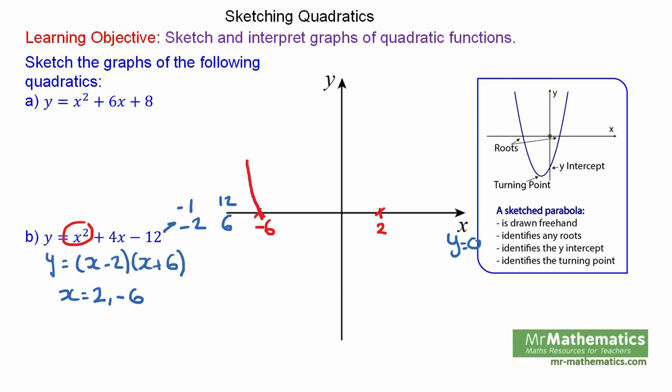Now we have got a positive coefficient of x squared, so y will have a negative intercept. The y value will be when x equals 0. Putting 0 into our equation, 0 squared plus 4 times 0 minus 12. So y will equal negative 12.